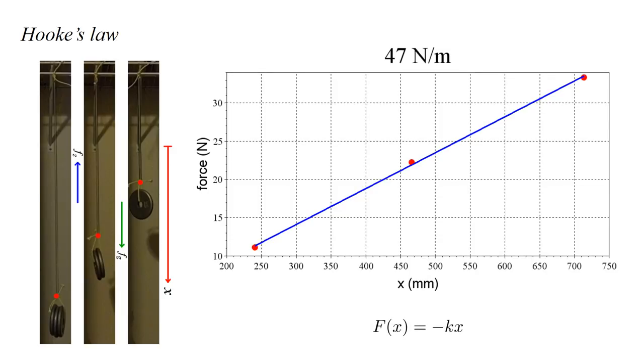Finally, we write Hooke's law: F(x) equals minus kx. The minus sign signifies that the force acts opposite to the displacement. k is the spring constant, and we assume x equals zero is the displacement when no weight is attached to the spring, that is, when the force is zero.